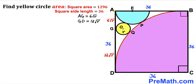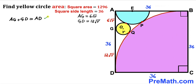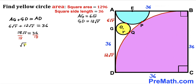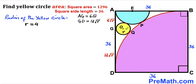AG = 6√r and GD = 12√r, and the whole length AD = 36. So: 6√r + 12√r = 36, giving 18√r = 36. Dividing both sides by 18: √r = 2. Squaring both sides: r = 4. Thus the radius of the yellow circle turns out to be 4 units.